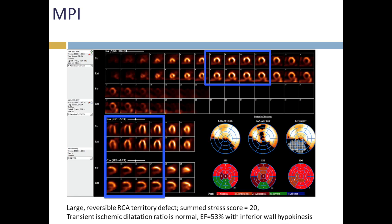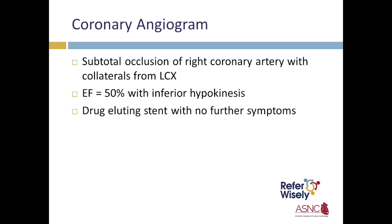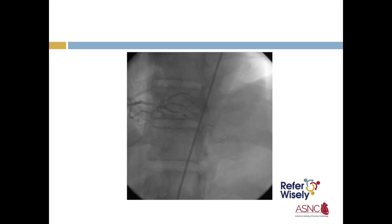Based on the above, despite the lack of treadmill findings, he underwent coronary angiography. This revealed subtotal occlusion of the right coronary artery with collaterals from the circumflex. Ejection fraction was mildly reduced at 50% with inferior hypokinesis. He underwent drug-eluting stent placement with no further symptoms, and a follow-up echocardiogram showed normalization of his regional wall motion abnormalities.